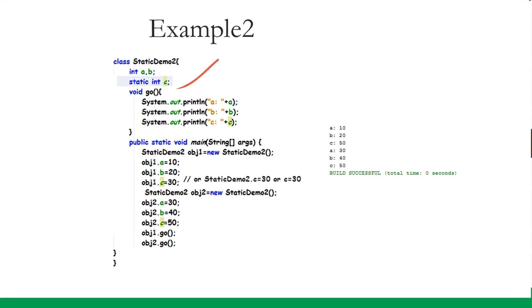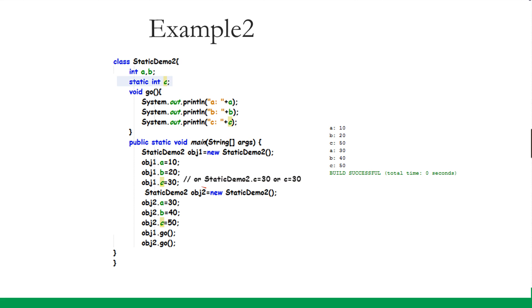In this example, a and b are non-static and c is static. Inside the go() function, which is non-static, I am printing the values of a, b, and c. I have created an object obj1 of this class, accessed a giving it value 10, accessed b giving it value 20. We can also access c via obj1, but we should use the class name — for example, StaticDemo2.c — or directly use c. Then I create a second object and assign values to a, b, and c of obj2.